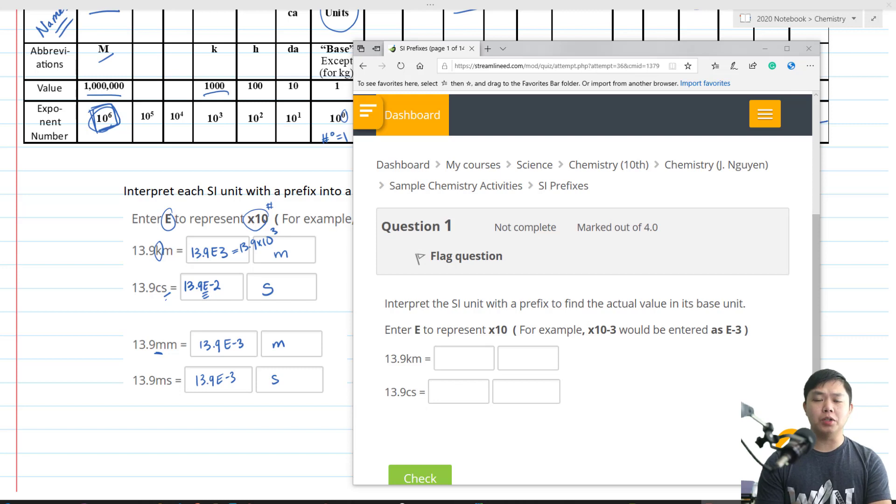Now let's go to streamline dot com to do some practice problem that provides instant feedback so we can self-reflect on our understanding. So in this case, we have the problem done for us already. Now just plug in the answer. So again, we have 13.9 KM. So we type in our answer 13.9. And instead of times 10 to the power of 3, we are going to type E and 3. And this M is meter.